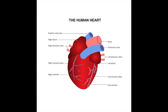Our heart is a muscle and requires a blood supply rich in oxygen in order to contract. The blood supply for the heart is supplied by the coronary arteries, which keep our myocardium supplied with oxygen. The left anterior descending artery supplies the anterior portion of the left atrium and ventricle with oxygenated blood. The right coronary artery supplies the right atrium and ventricle with oxygenated blood.